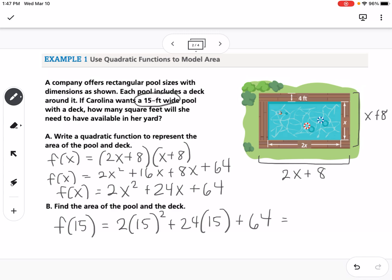So if we type that into our calculator, we get 874 square feet. That is our area of the pool plus the deck.